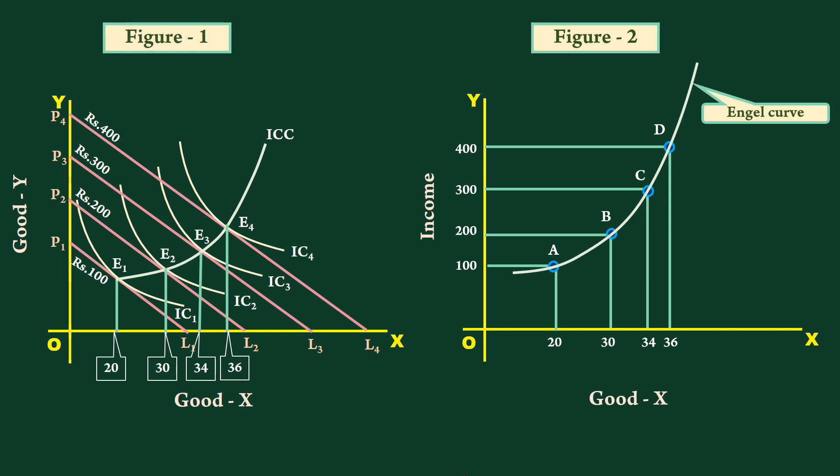The tendency tells us that the proportion of quantity purchased falls as income increases. According to Engel's law, good X is a necessary good. The curve clearly illustrates this.